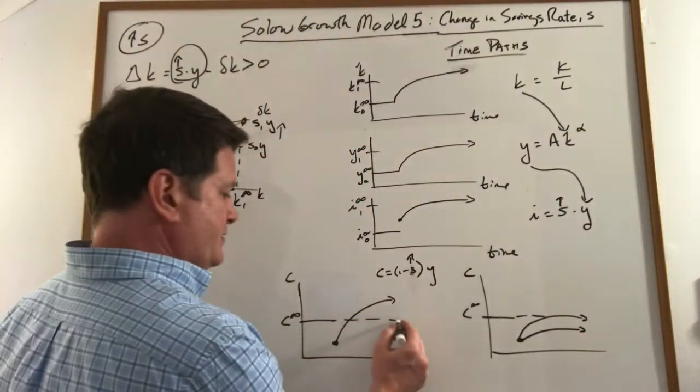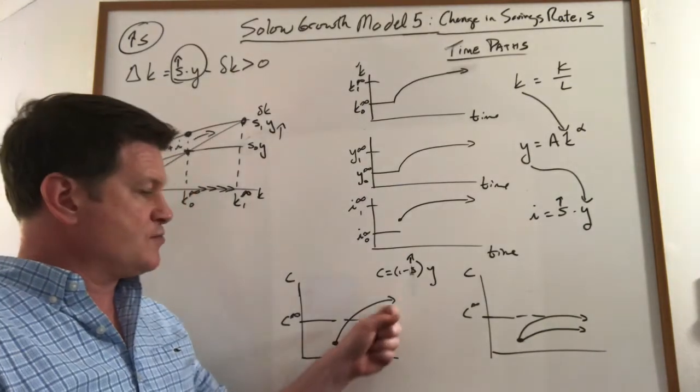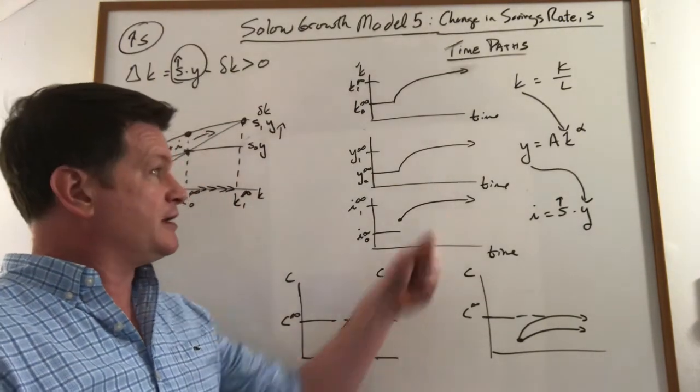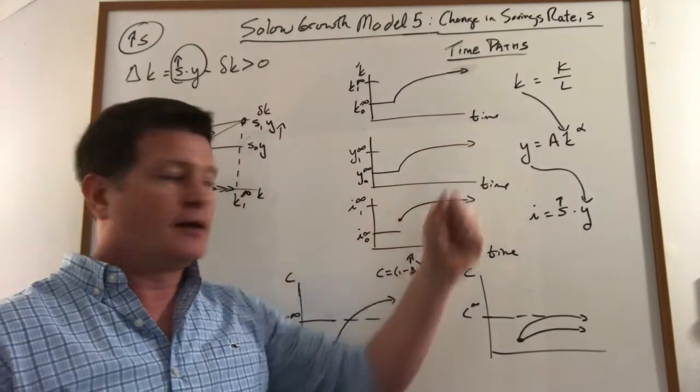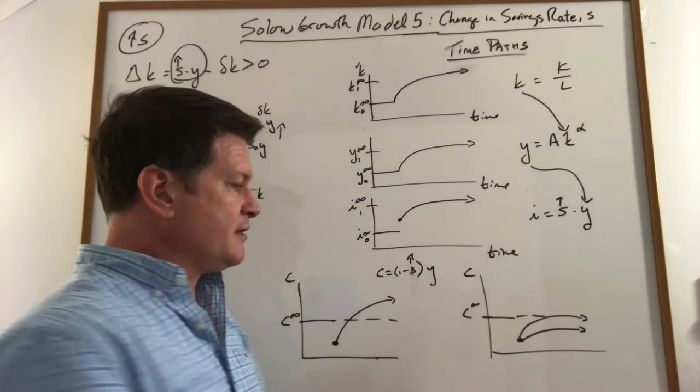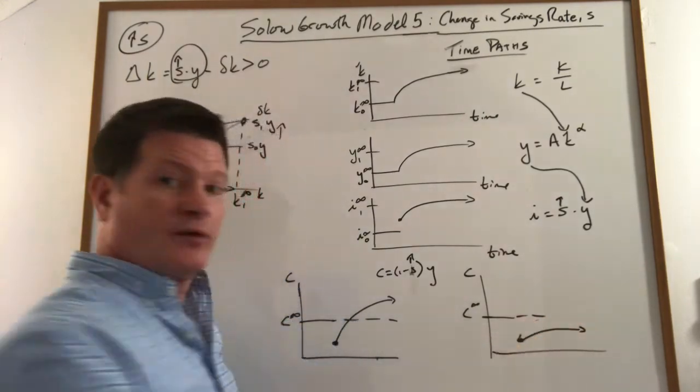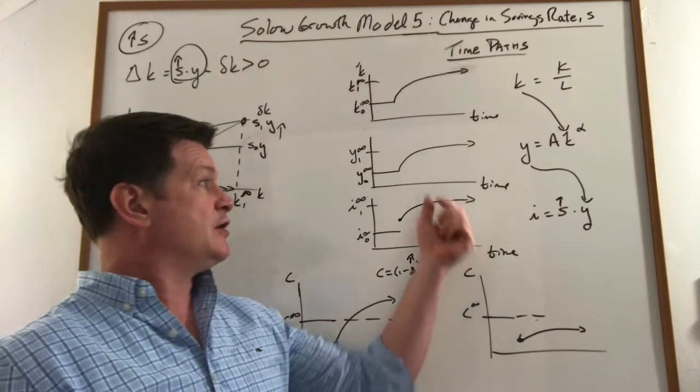But the question is, do we grow consumption eventually to be more than it was originally? I mean, we have more GDP. Or did we save so much that our consumption drops and then never recovers to where it was because we're saving, we have more GDP, but we're saving a huge fraction of it.